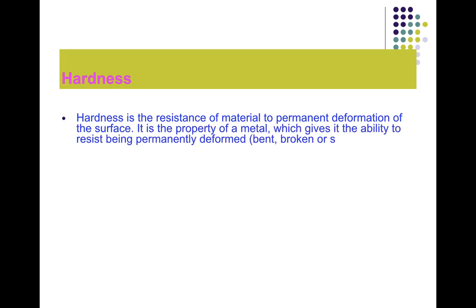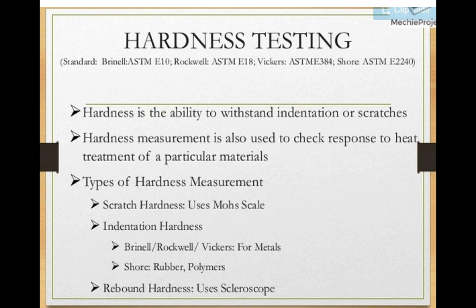Hardness is a property of metal which gives the ability to resist permanent deformation. When we have a workpiece that is permanently deformed, we can reduce this deformation by giving hardness to the material. So hardness is the property of a material which gives it the ability to not permanently deform.